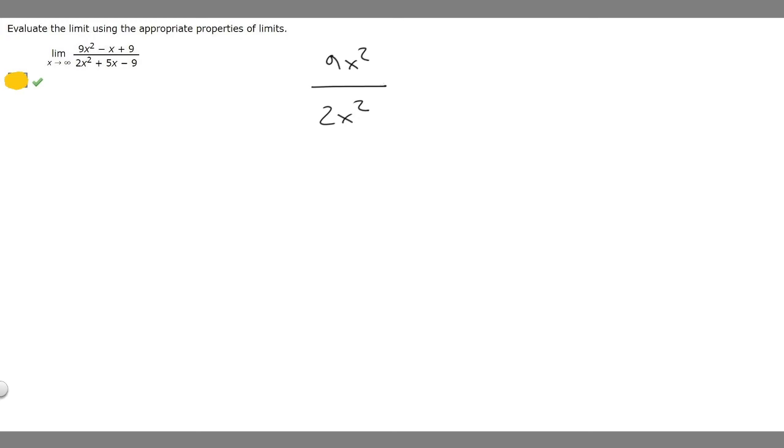And so what you want to realize here is that the highest degrees on both of them are going to be the same. So this one's 2 and this one's 2. And so when they're the same, what you're going to do to find the limit is just divide the coefficient of the top one by the bottom one. So this would just be 9 over 2.